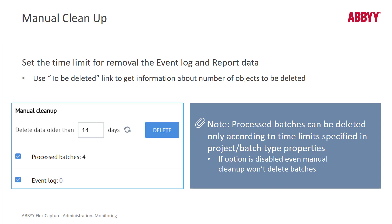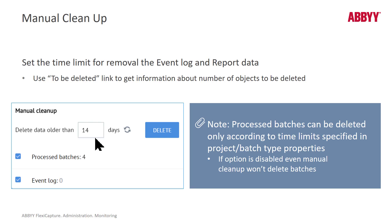Not only can you set up automatic cleanup, but you can also invoke manual cleanup. In this case, you can specify the time interval you are focused on. For instance, if you wanted to delete all batches that were exported seven days or later, you can switch this from 14 to 7, click delete, and that will clean up your system in real time.